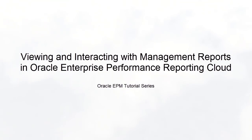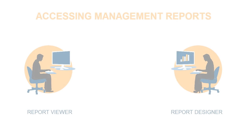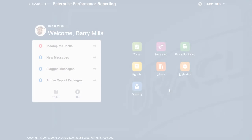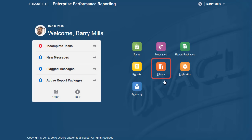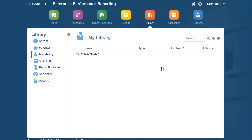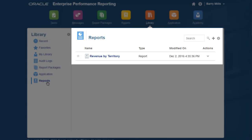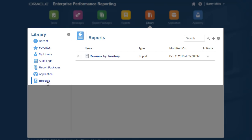Welcome to this step-by-step tutorial on how to view and interact with management reports in Oracle Enterprise Performance Reporting Cloud. Users can view and interact with management reports that have been shared with them by report designers. I'm logged in as a user who has been granted access to the Revenue by Territory report, which is available in the Reports folder in the library.